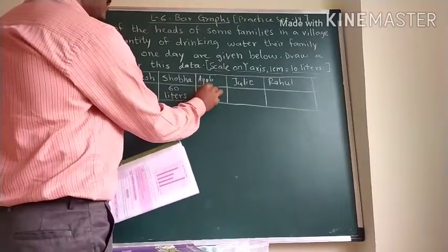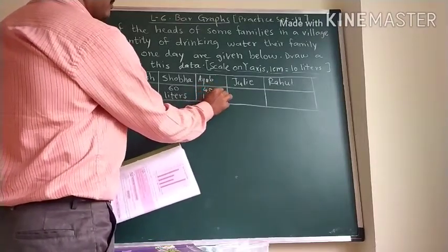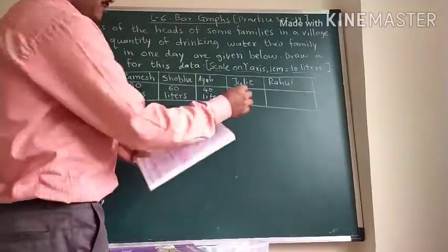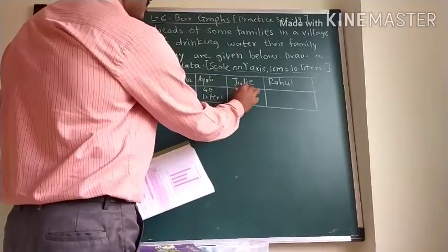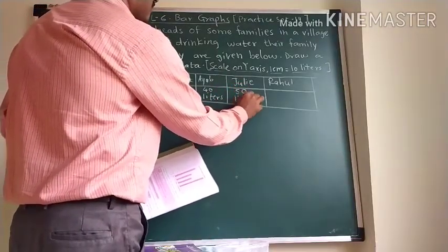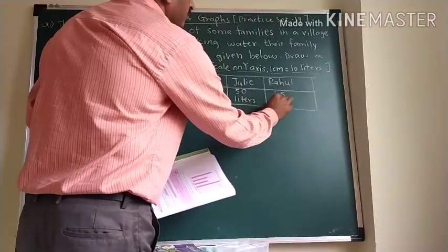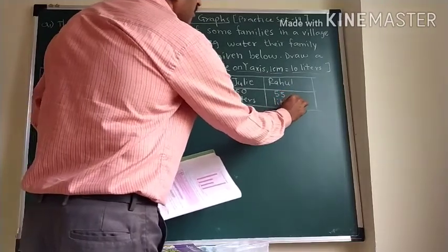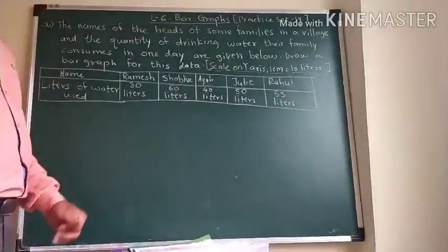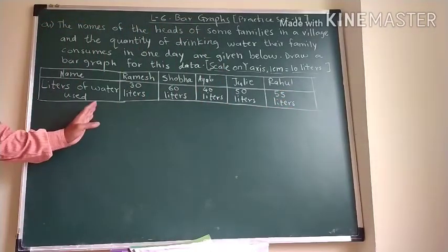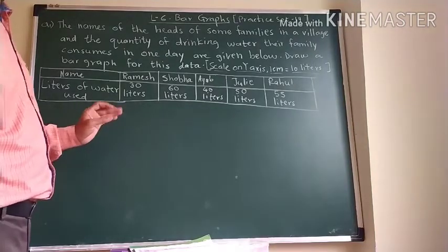Ayub family is using 40 liters, Julie's family is using 50 liters and Rahul's family is using 55 liters of water in one day. And for this data we have to draw a bar graph.